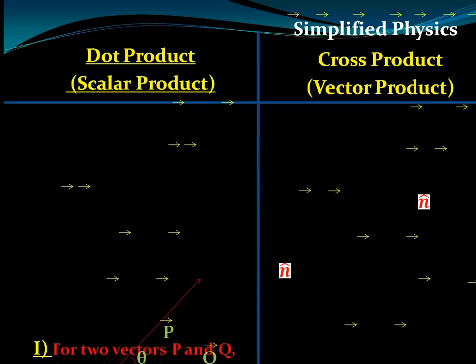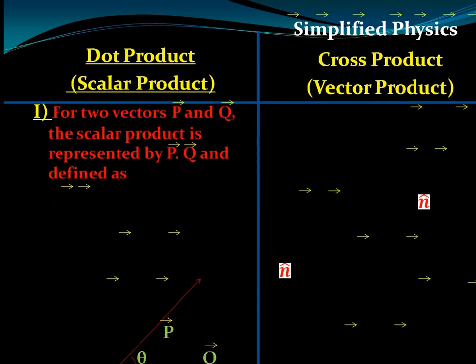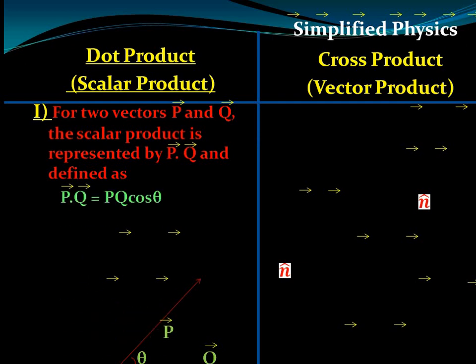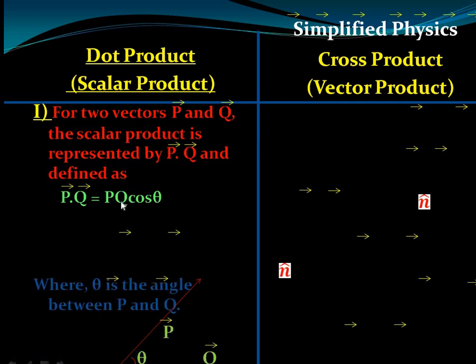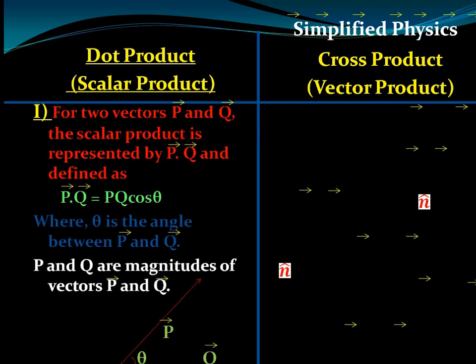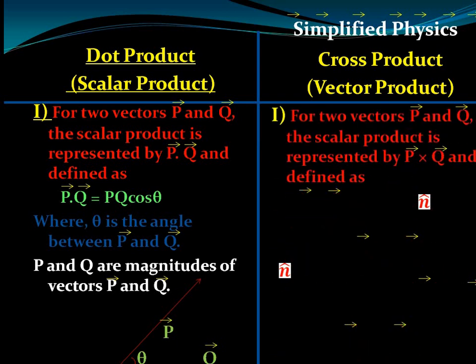Let's begin with the dot product. The dot product of two vectors p and q is represented by p·q and is defined as p·q = pq cosθ, where p and q are the magnitudes of vector p and vector q, and theta is the angle between the two vectors as shown in the figure.